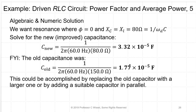The new required capacitance works out to 33.2 microfarads, while the old capacitance at 150 Ω reactance was 17.7 microfarads. The difference is what needs to be added to the circuit. Since capacitors add in parallel, we don't need to break the circuit — we can simply add a suitable capacitor in parallel, which is much easier than replacing the existing one.